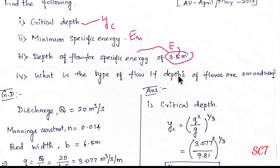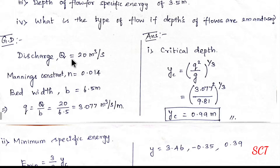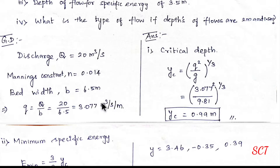Depth of the flow for specific energy 3.5 m. Next, what is the type of flow if depth of flow is 2 m and 1.5 m? Given data: first we will get the discharge value. We know q per unit width is Q divided by B — Q is 20, B is 6.5 — giving 3.077 m³ per second per meter.